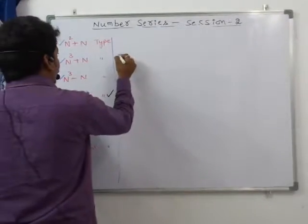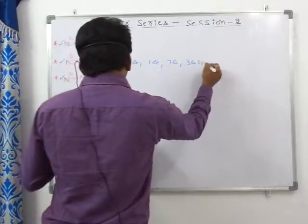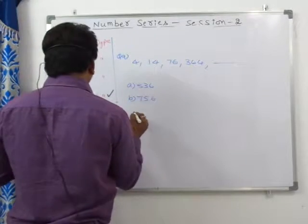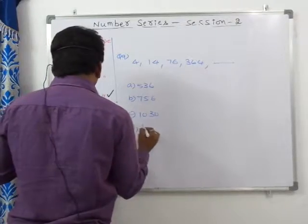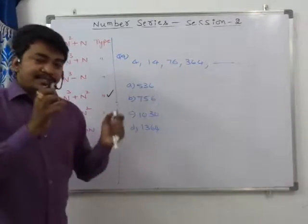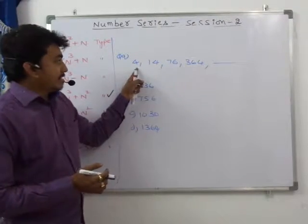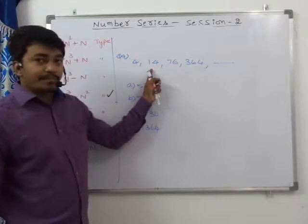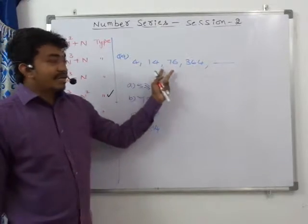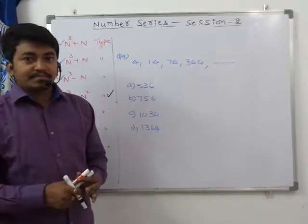Question number 9: the series is 4, 14, 76, 364 — what is the next number? Options are 536, 756, 1030, and 1364. The differences are 10 and 62 — no clear symmetry. These numbers are also not close to simple squares. Let us try expressing them in the form N³ + 3N: 4 = 1³ + 3×1, 14 = 2³ + 3×2 (8 + 6), 76 = 4³ + 3×4 (64 + 12).